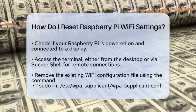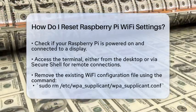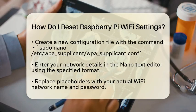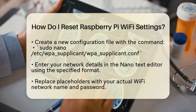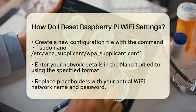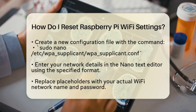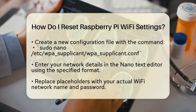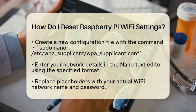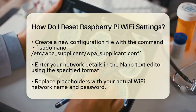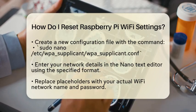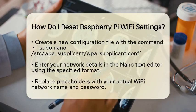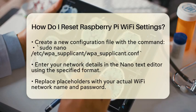Next, you will want to remove the current Wi-Fi configuration. This is typically stored in a file called wpa_supplicant.conf. To do this, type the following command into the terminal: sudo rm /etc/wpa_supplicant/wpa_supplicant.conf. This command will delete the existing Wi-Fi configuration file.